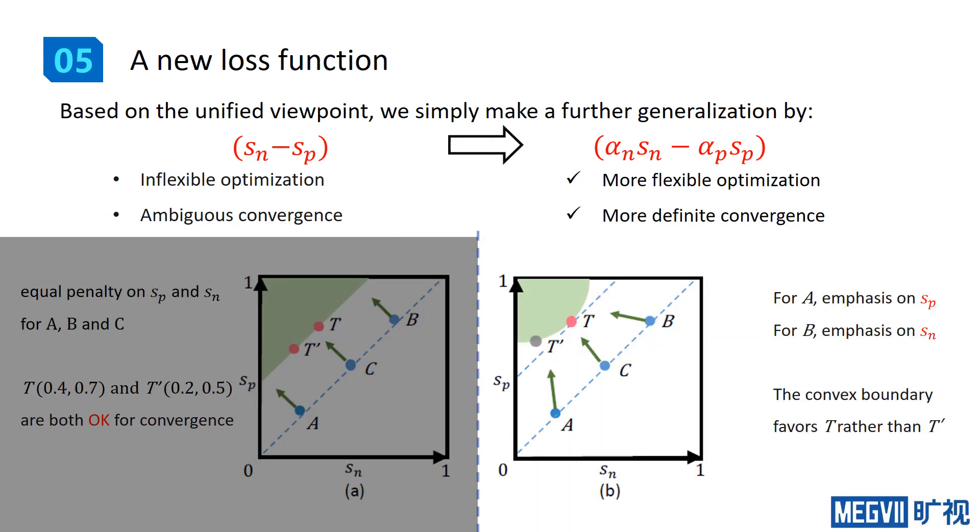In contrast, when optimizing alpha_n s_n minus alpha_p s_p, things become different. For status A, it lays emphasis on enlarging s_p, while for status B, it lays emphasis on reducing s_n.